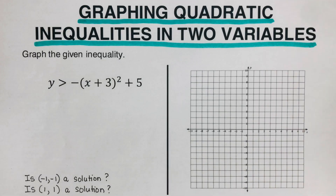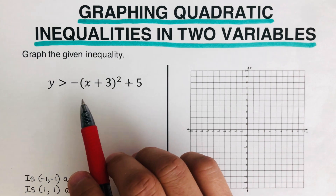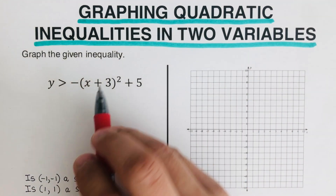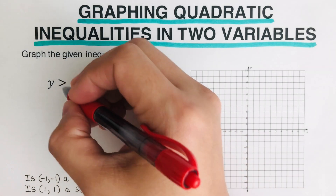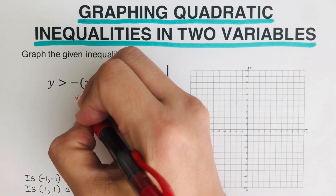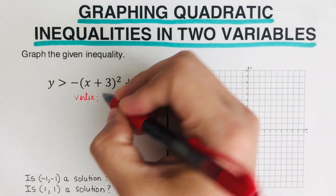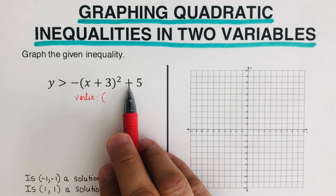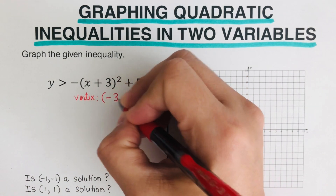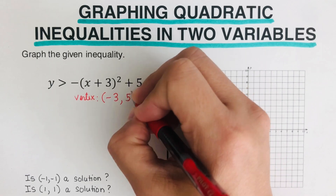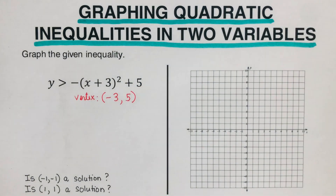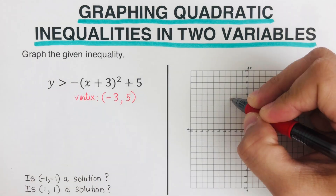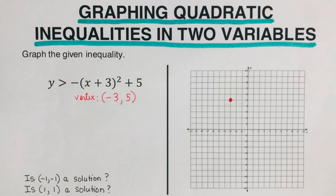The first step to graph this is to determine the vertex. Looking at this problem, our vertex is (h, k). We remember that in determining the vertex we switch and keep, so that would be negative 3 and positive 5. So our vertex sits at negative 3 and positive 5 — this is the vertex right here.